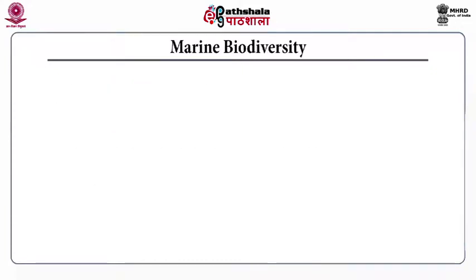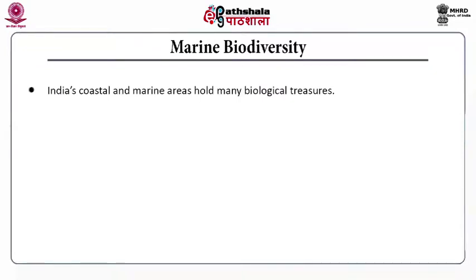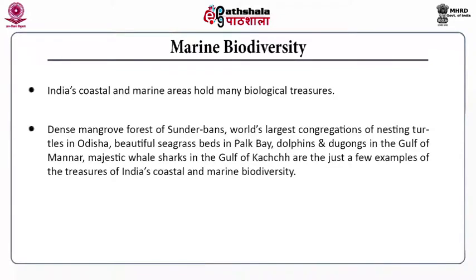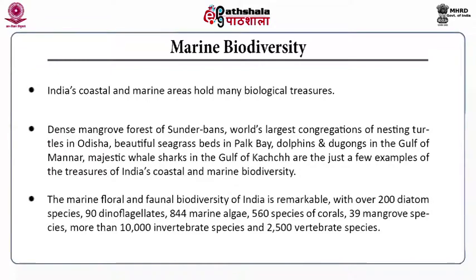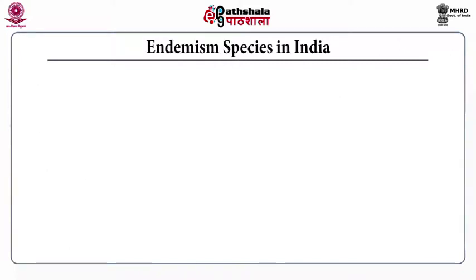India's coastal and marine areas hold many biological treasures: dense mangrove forests of the Sundarbans, the world's largest congregations of nesting turtles in Odisha, beautiful seagrass beds in Park Bay, dolphins and dugongs in the Gulf of Mannar, and majestic whale sharks in the Gulf of Kutch. The marine floral and faunal biodiversity of India is remarkable — it includes 200 species of diatoms, 90 species of dinoflagellates, 844 species of marine algae, 560 species of corals, 39 species of mangroves, and more than 10,000 species of invertebrates and 2,500 species of vertebrates.